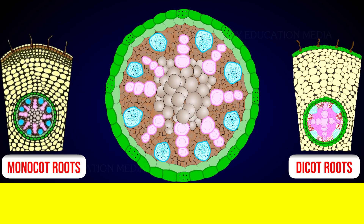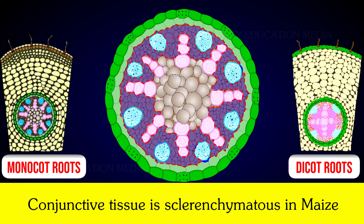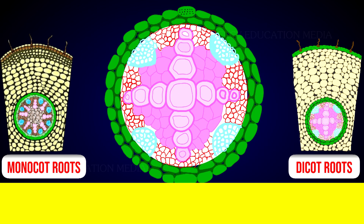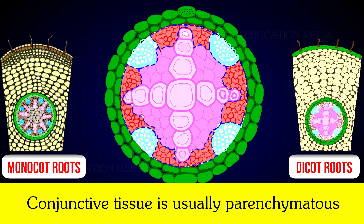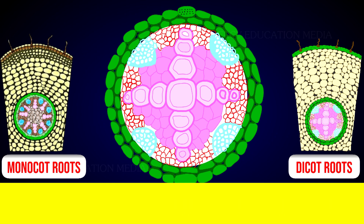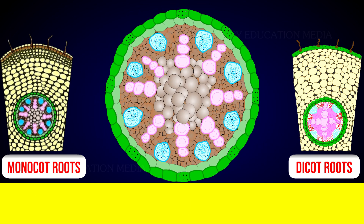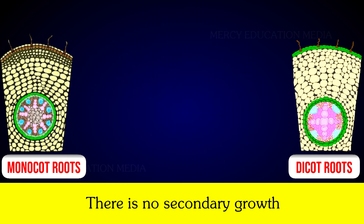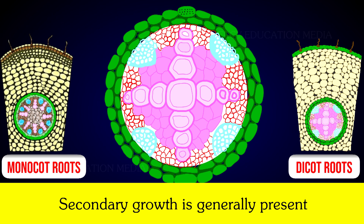In monocot roots, conjunctive tissue is parenchymatous, as in maize. In monocot roots there is no secondary growth, whereas in dicot roots secondary growth is generally present.